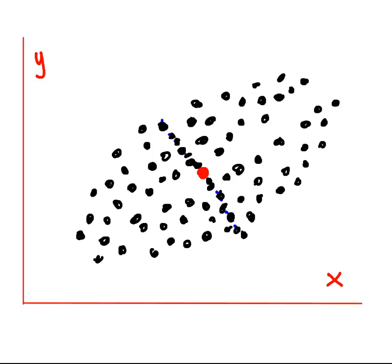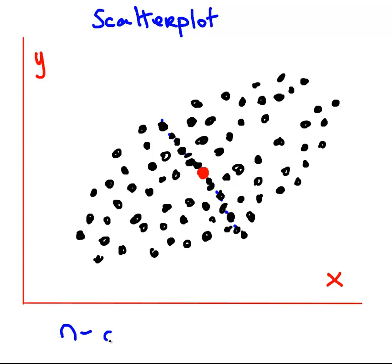Essentially what we have here is a scatter plot, and I'm using this because it's sort of two-dimensional space, nice and easy to visualize. But it doesn't actually have to be two-dimensional space — it could be n-dimensional space. I'm using two-dimensional space so we can get a proper sense of what we're looking at, but it can expand into n-dimensional space.